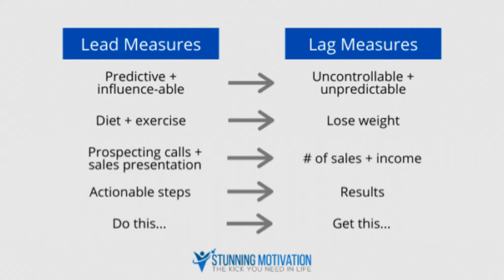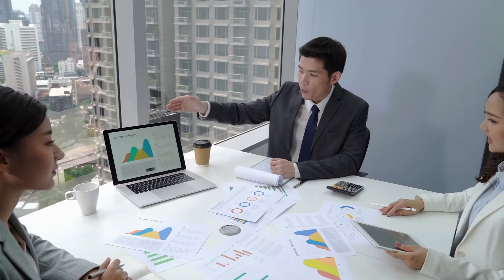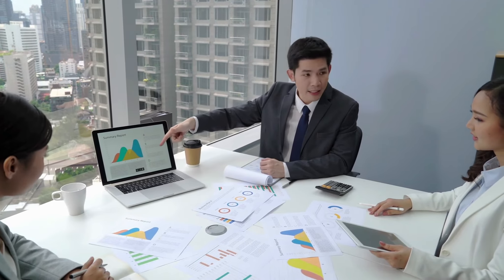Take a look at this picture — this is how you should set your goal. Lag measures are uncontrollable and unpredictable. Lead measures, on the other hand, are predictive and influenceable, meaning you can work on them. Losing weight is a lag measure; the lead measure for losing weight is diet and exercise. To increase sales is a lag measure, and the lead measure is the number of prospecting calls and sales presentations you deliver. You cannot work on increasing the sale directly, but you can work on increasing the number of prospecting calls and improving your sales presentation so your conversion rate will be higher.